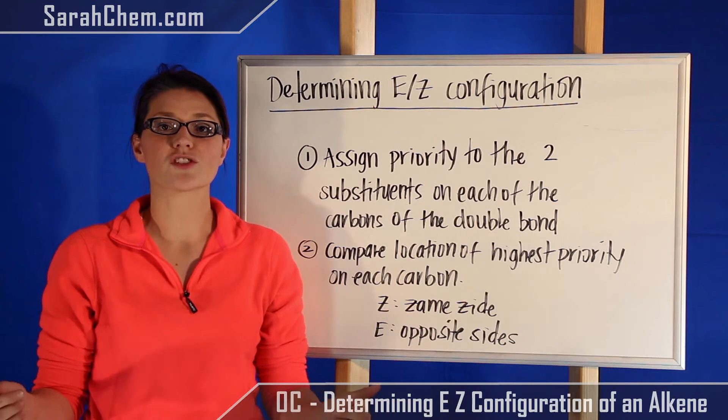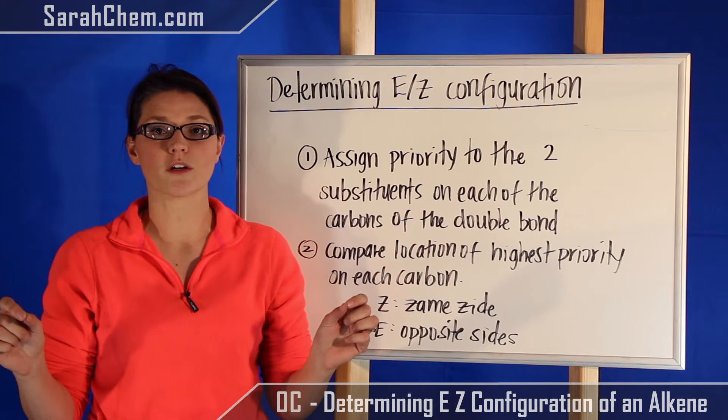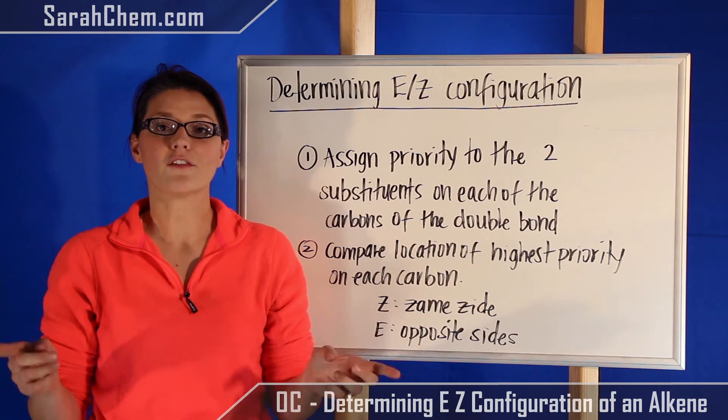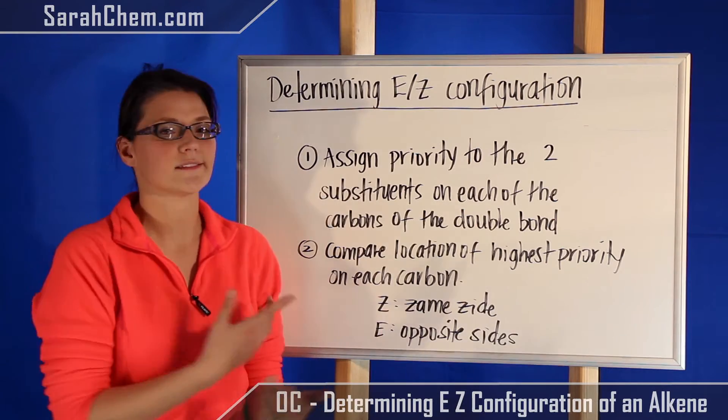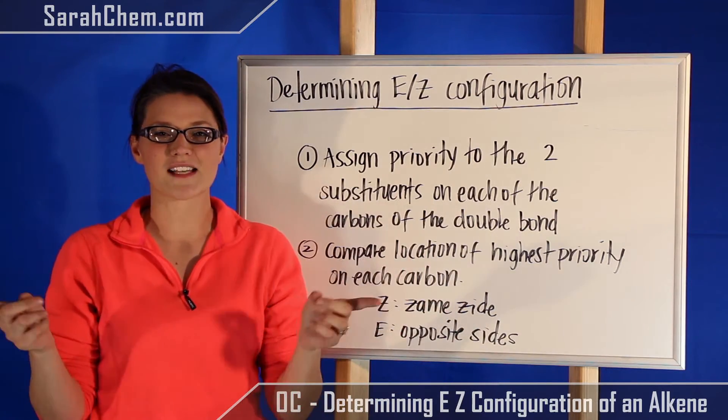Once you've established the locations of priority one and two on each carbon, you're then going to take the priority one groups on each of those carbons and figure out where they are relative to one another. If they're on the same side, you have a Z, and if they're on opposite sides, it's an E.